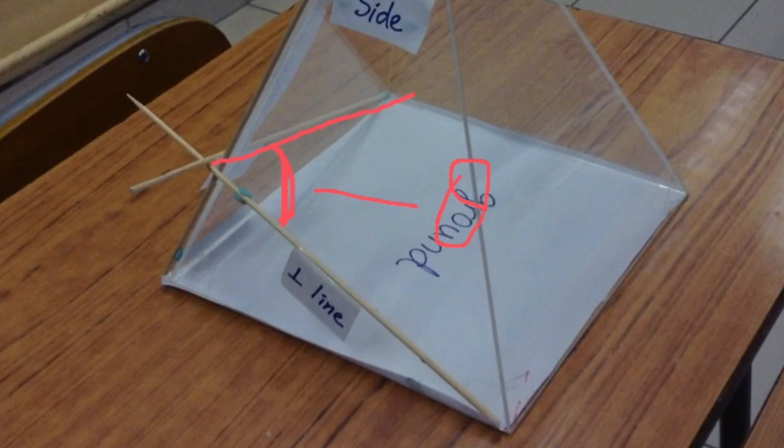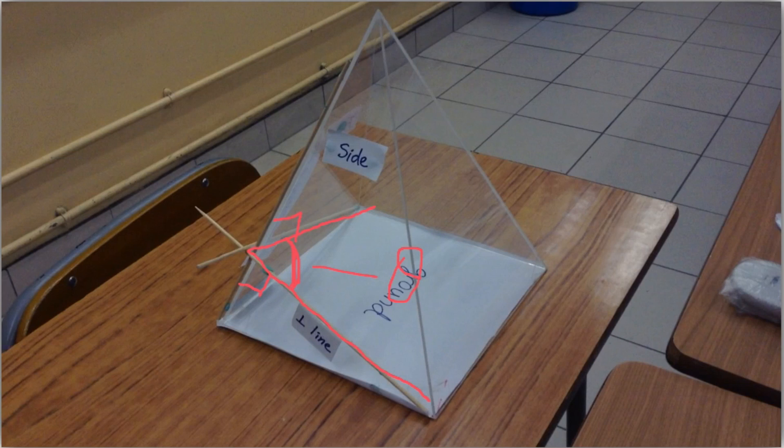And actually, it is the angle between these two perpendicular lines. They are both perpendicular to the line of intersection. And this line, that line in blue is the line of intersection.